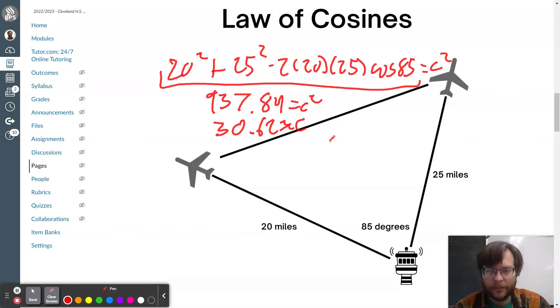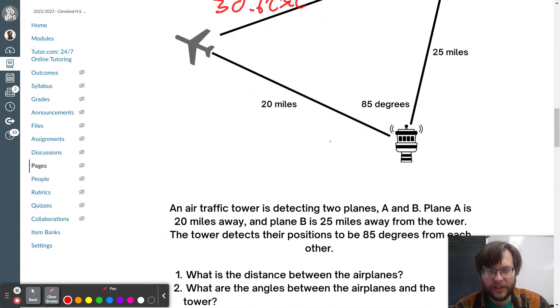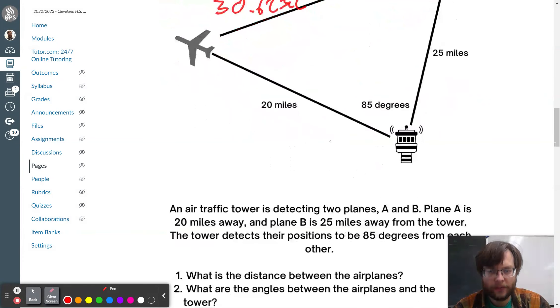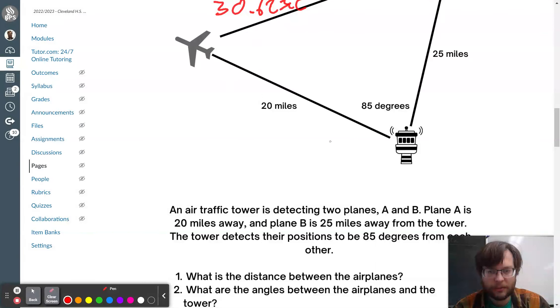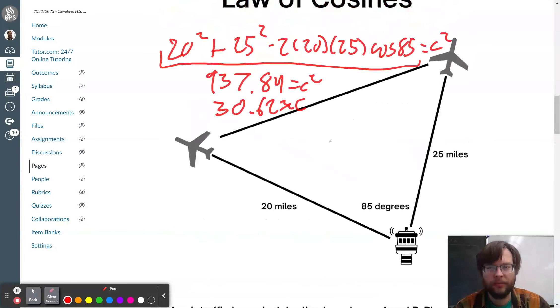What am I actually supposed to figure out? What is the distance between the airplanes? Nailed it. What are the angles between the airplanes and the tower? So, I want to know this angle and this angle right here. So, I could do either law of sines or I could do law of cosines. I'm going to do law of cosines because this is called the law of cosines activity or review station, I guess.